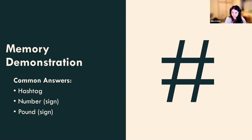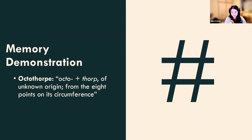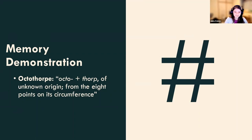No one has said the correct answer of what this is actually called, so I'm going to teach you something new and we'll come back to test how well this new memory forms. This is actually officially called an octothorpe. It comes from 'octo' and 'thorpe.' Octo means eight, and thorpe is actually of unknown origin — linguists have studied this but they're not sure where 'thorpe' comes from. It means from the eight points of the circumference — there are eight points on this symbol — so that's where octothorpe comes from, according to the Merriam-Webster dictionary.